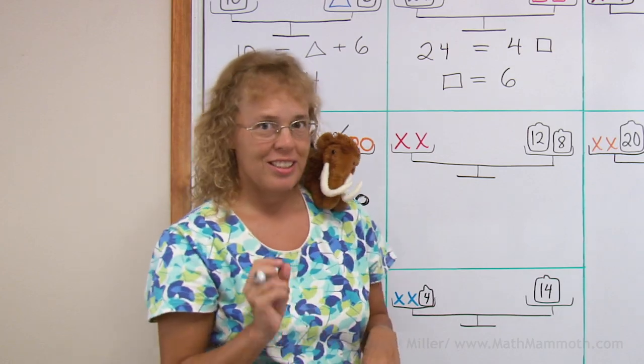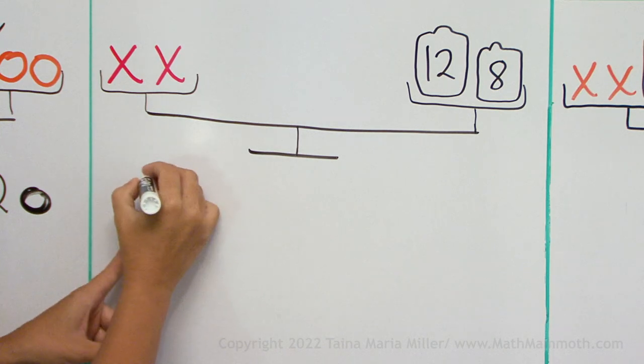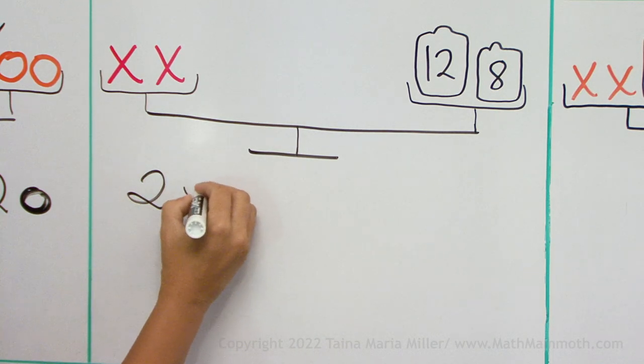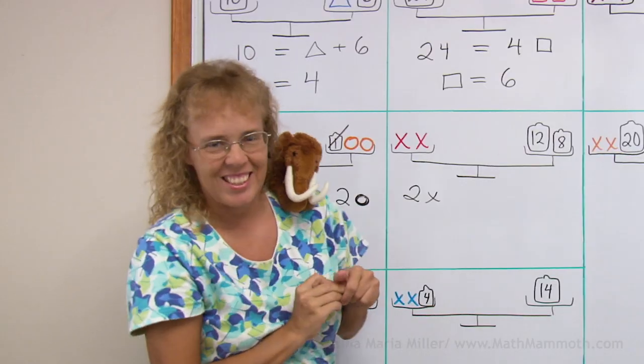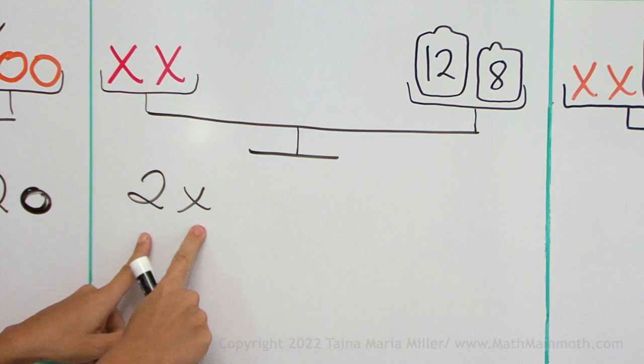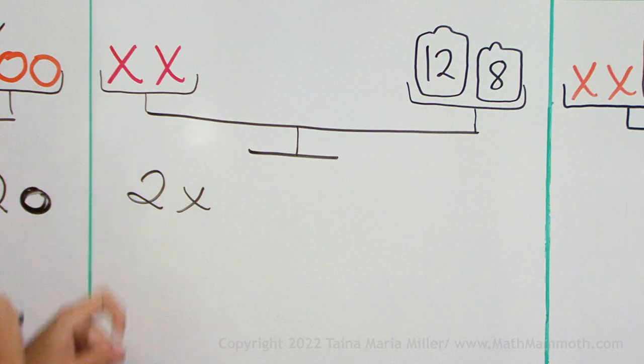Over here, the equation is what? On this side we have two x's, so I will write 2x. We have our x now, the unknown. 2x means x and x. Two x's, x plus x.